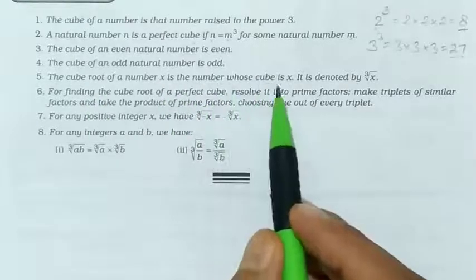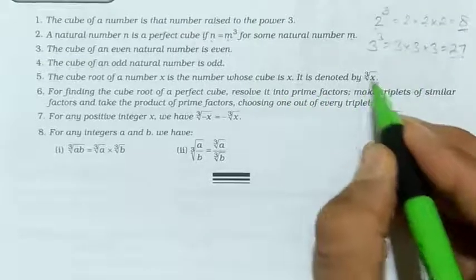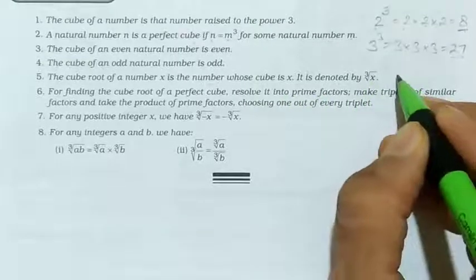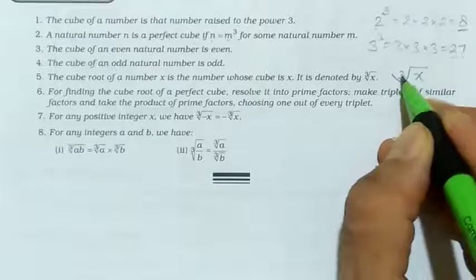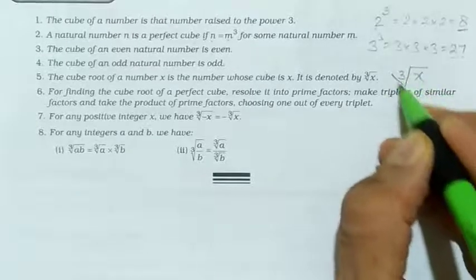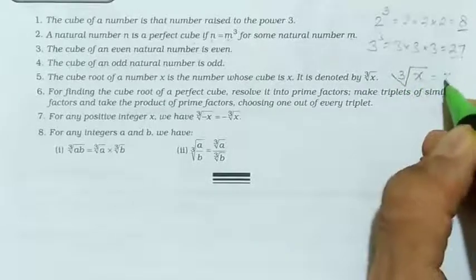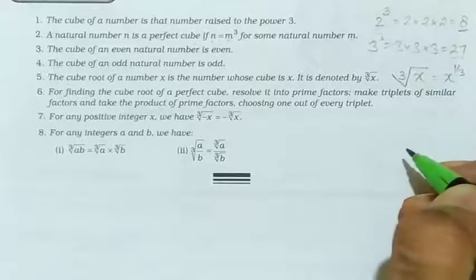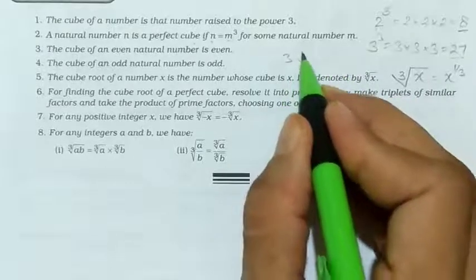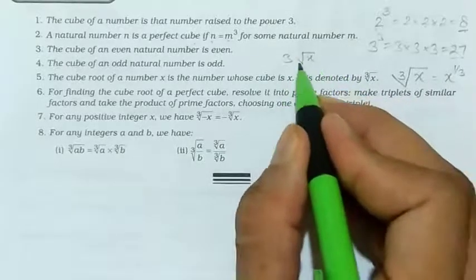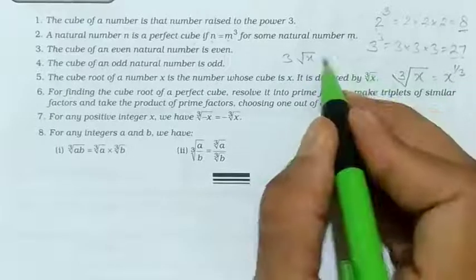Fifth point: the cube root of a number x is the number whose cube is x, and it is denoted by the cube root symbol of x. Here, the '3' is written inside the root sign — that means x to the power 1 by 3. But if you write this as 3 outside the root sign, that will not be equal to x power 1 by 3.